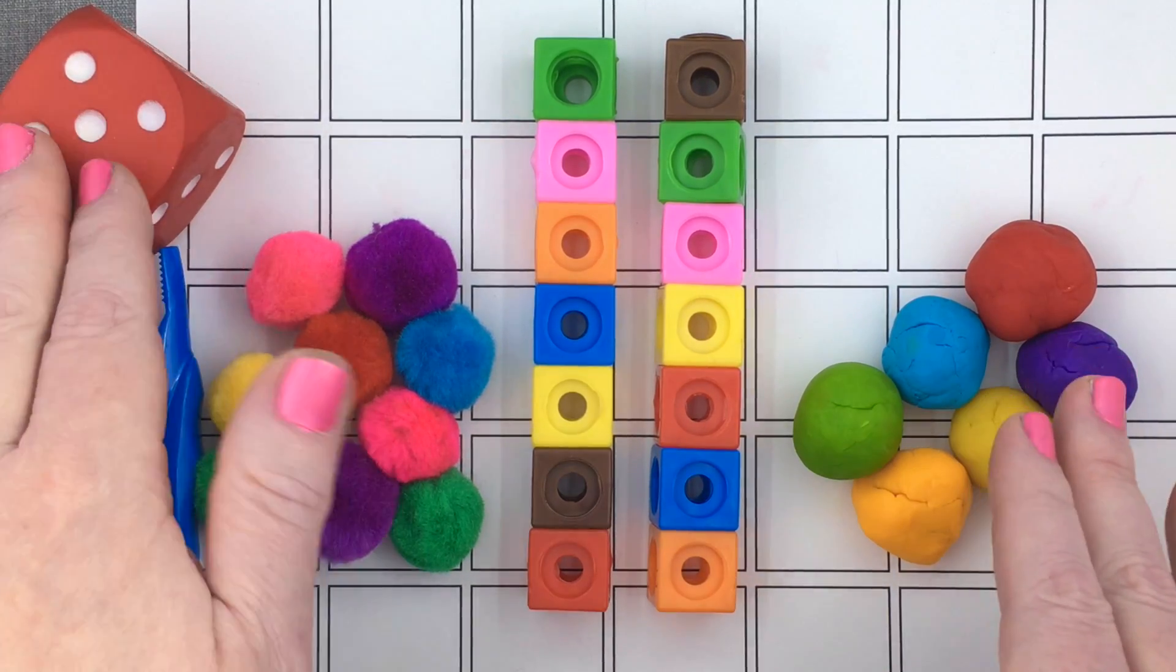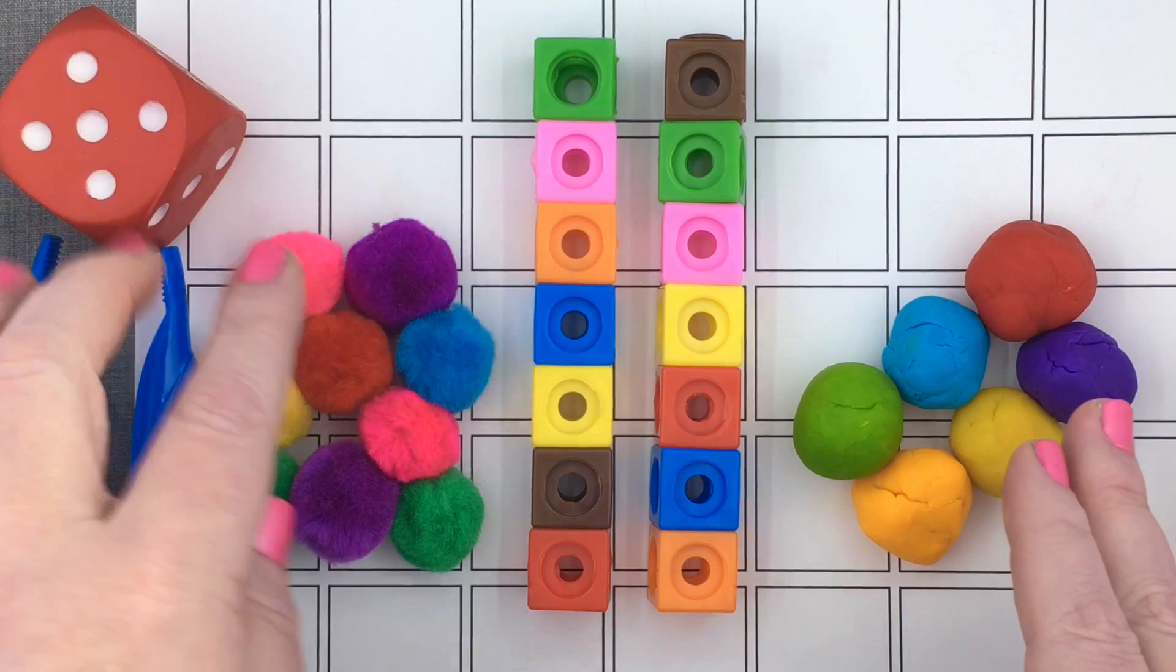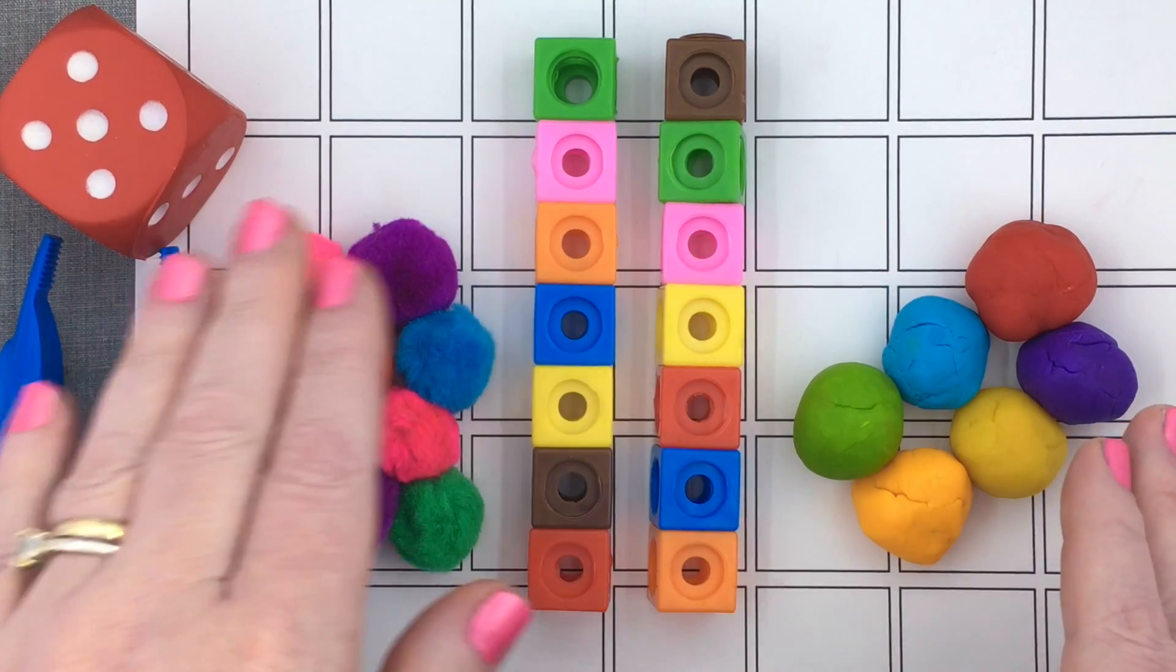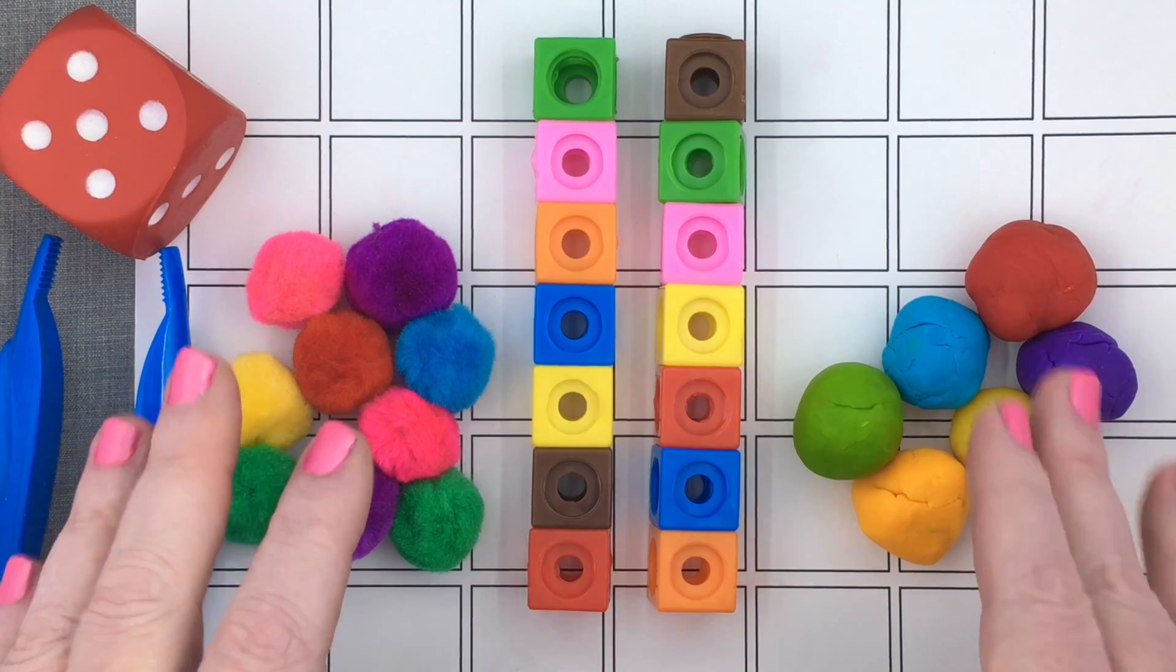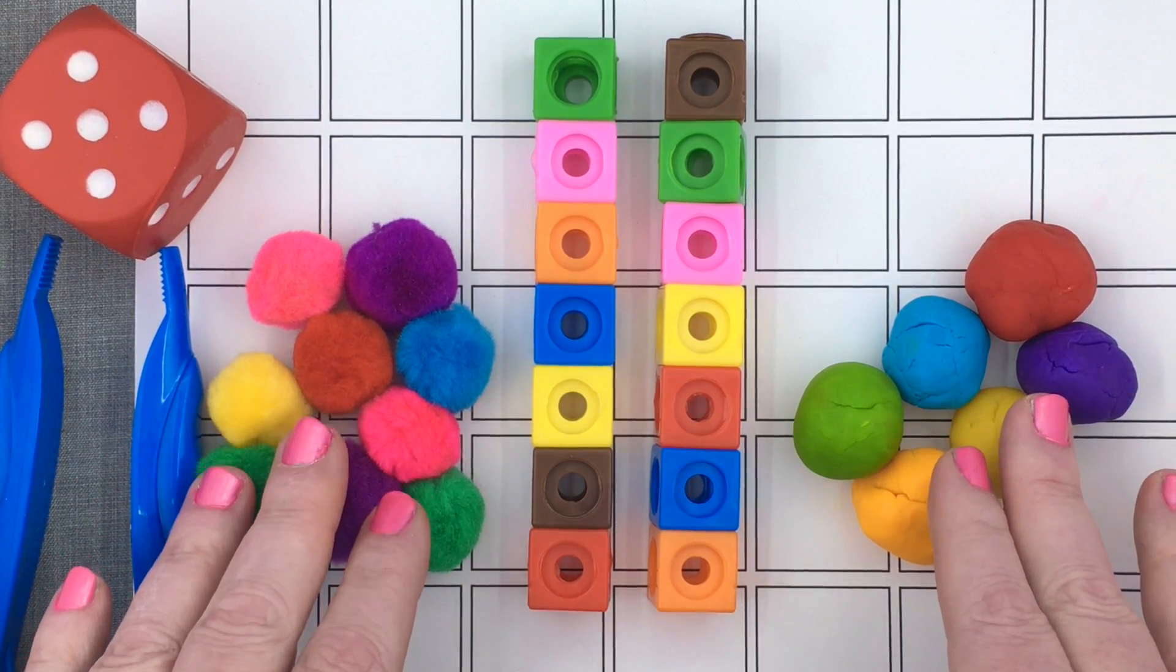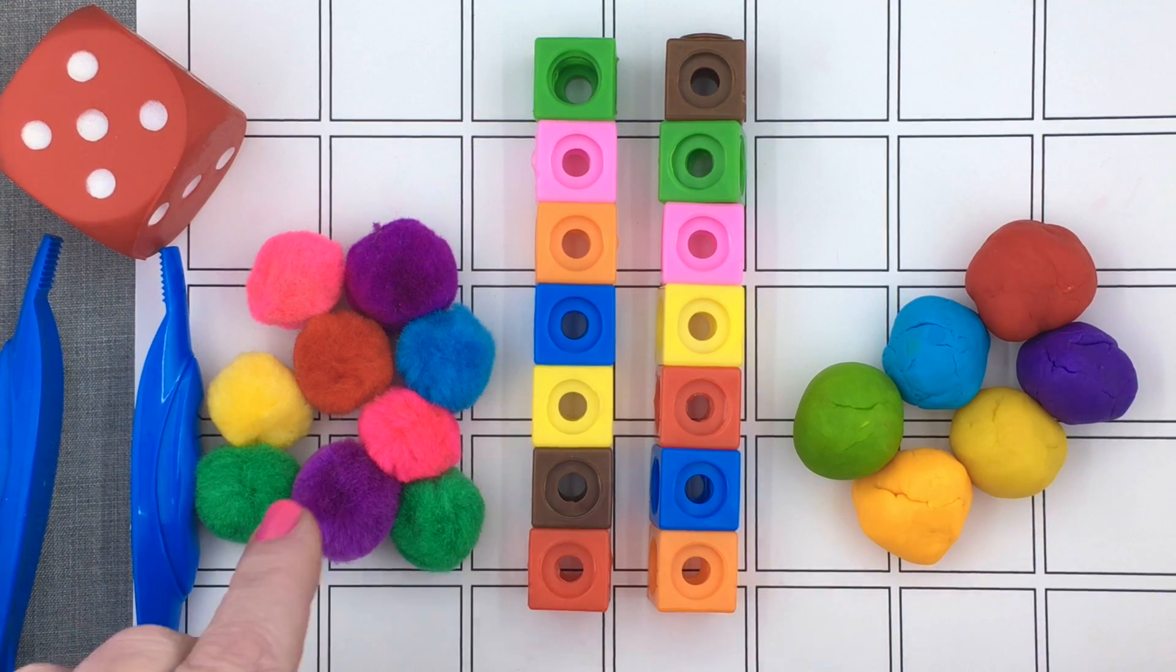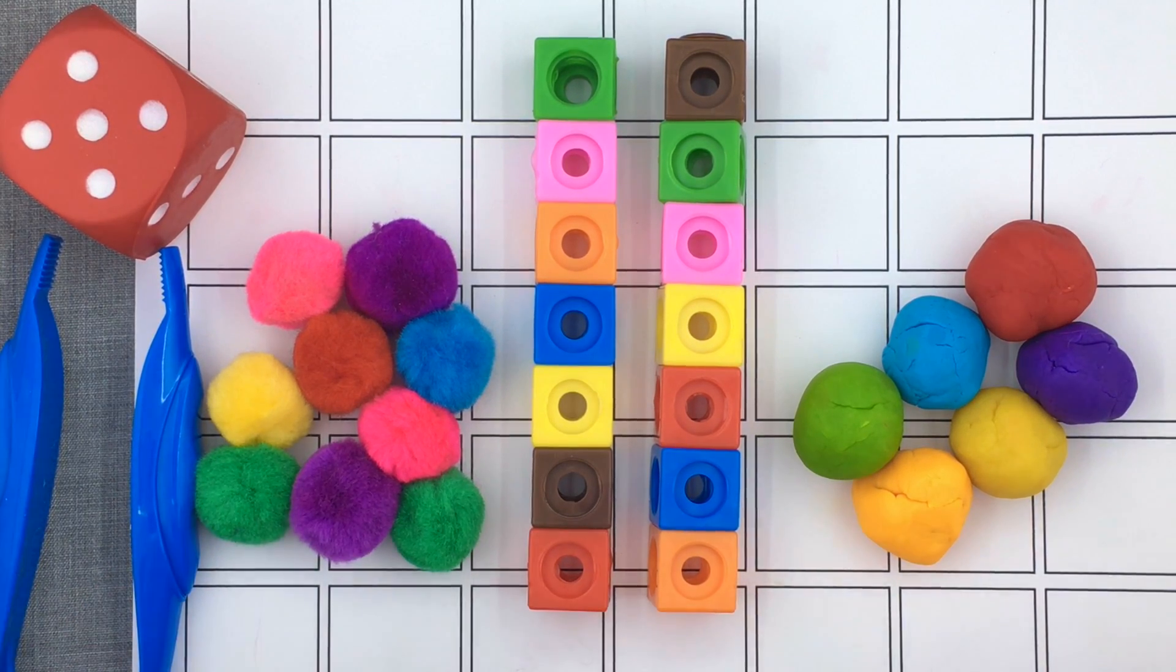For super young children, you don't even need to use a dice. They can just put the counters on themselves. This is really a great activity for math skills as well as fine motor skills development. I'll share with you our top three choices that we love to use with this mat.